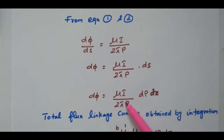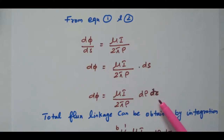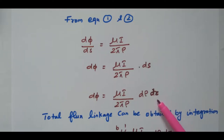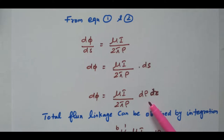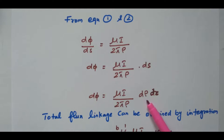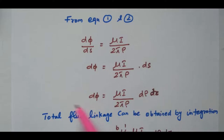So dφ equals μI divided by 2πρ, where dS equals dρ times dz — radius times height. Here rho is the radius and z is the height; we consider 1 meter length of cable. To find the total flux linkage, we integrate both sides.